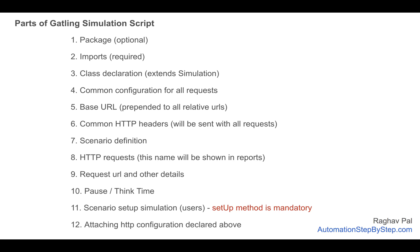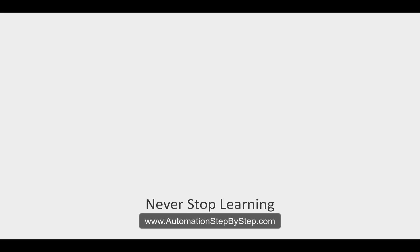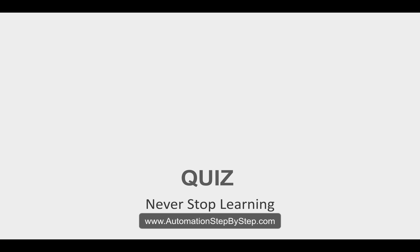So these are the different parts of a Gatling simulation script. We have seen a very simple simulation script and its basic parts. In the coming sessions we will go a little deeper and create different types of scenarios and scripts. You can take the quiz if you have completed this part. Thank you for watching and never stop learning.